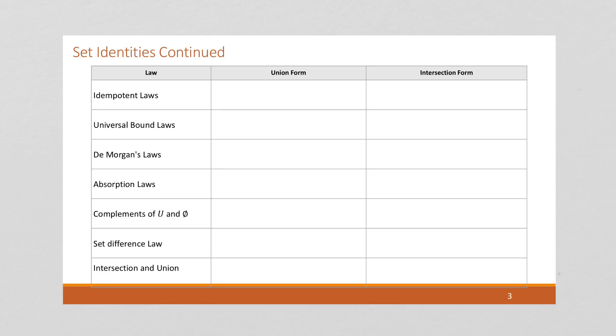Here we've got the idempotent laws. If we have A and we union it with itself, we're going to get A. And similarly, if we take the intersection of A and A, we're going to get A.